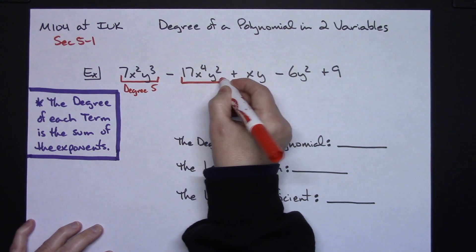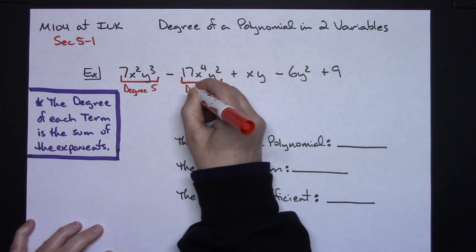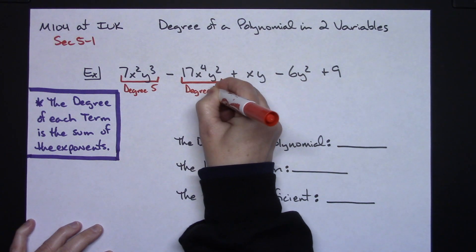Now I'm going to do the same thing right here. Add them up. Four and two is six. So the degree of this term is six.